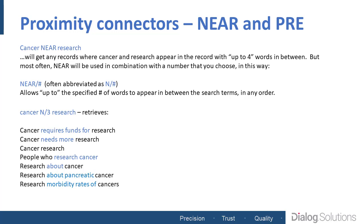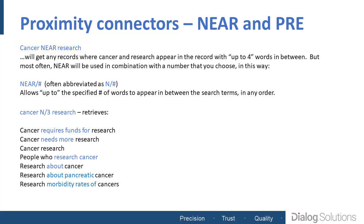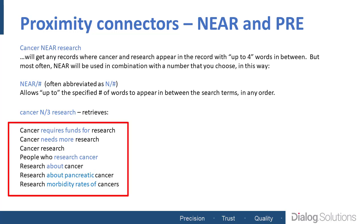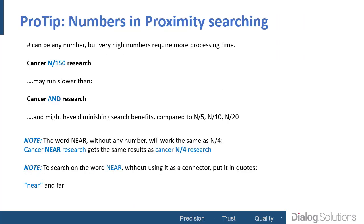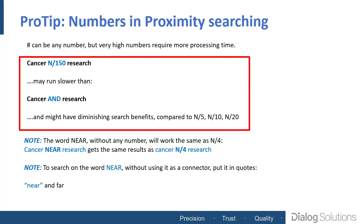We'll start with NEAR, which is the more commonly used. If you type two terms with the word NEAR in between, you'll get any records that have both of those terms, in any order, with up to four words in between them. Most of the time, the NEAR connector is used in combination with a number — either bigger or smaller than four — using the format N slash followed by a number. If we use N slash 3, here are some examples of what would be retrieved. The number can be zero, and technically there's no limit to how high it can be, but at very high numbers it's less effective, so at some point it makes more sense to just use AND.